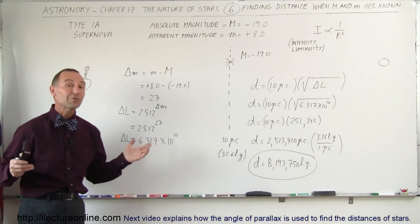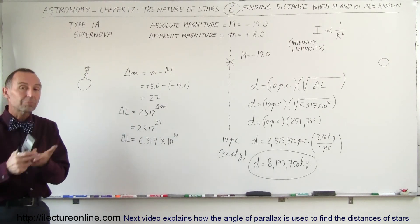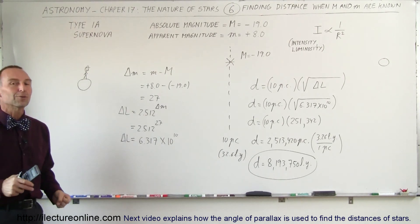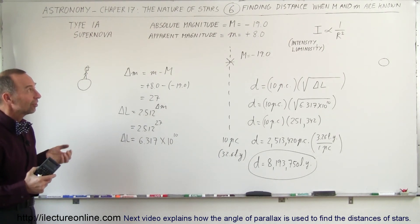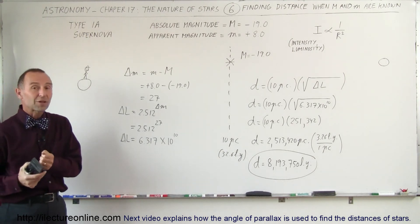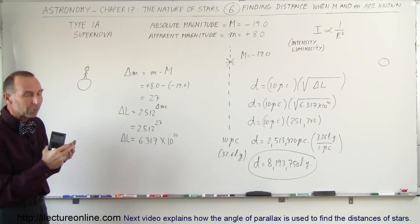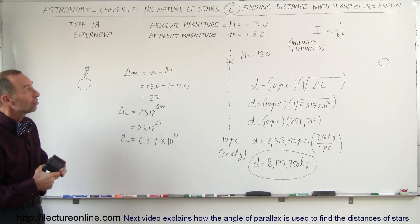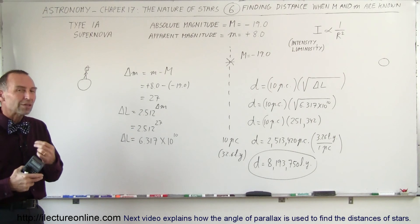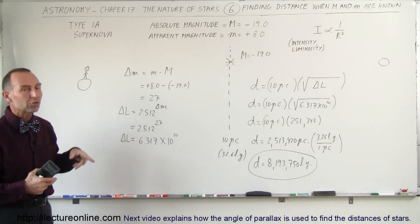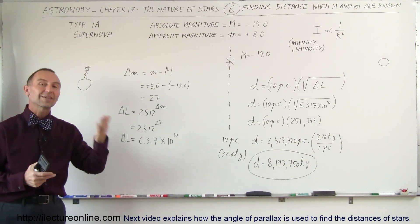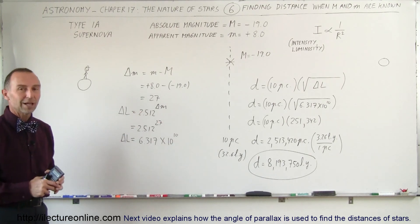If you want light years, multiply it times 3.26 to get the distance in light years. And that's how we find the distances knowing both the absolute and the apparent magnitude. So the key then is: apparent magnitude is easier to measure, we just use a telescope. And then we have to find a way to determine the absolute magnitude. Once we know both, we can calculate the distance.